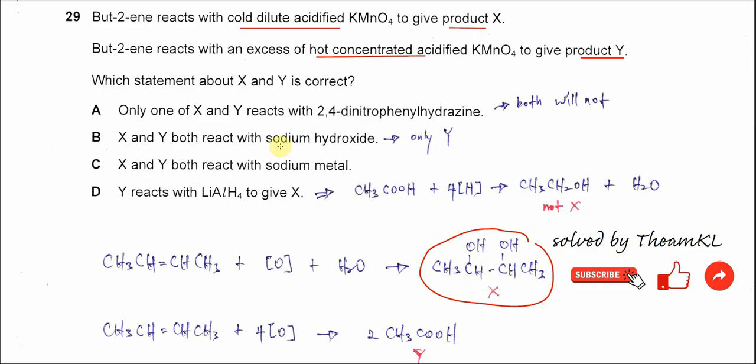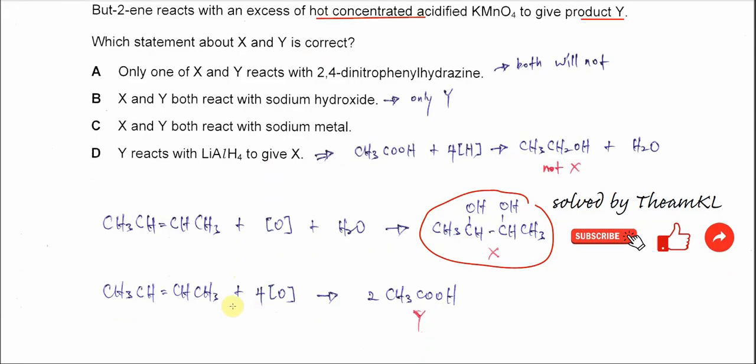For the but-2-ene, when it reacts with hot concentrated acidified KMnO4, it will be this equation. So the C=C double bonds totally break and these two parts will form the same product, which is ethanoic acid.